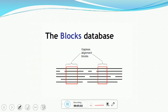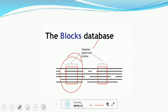This is a representation of the block database — we have to select the portions of sequences showing zero gaps. Here we have the gap-less alignment blocks. Only these portions are used, or the BLOSUM matrix will be created using only these portions.